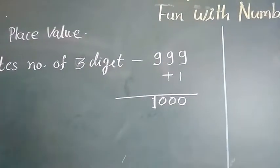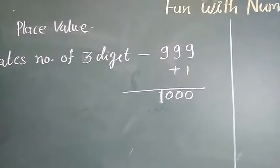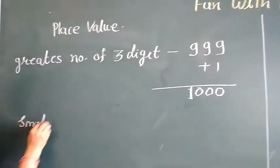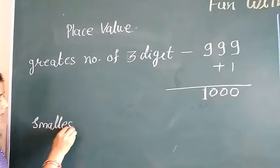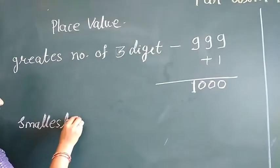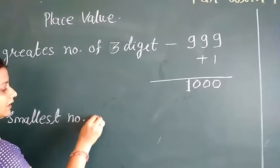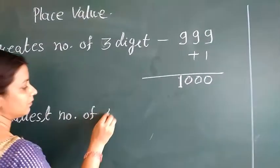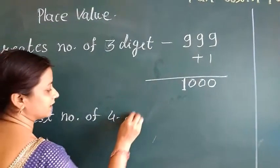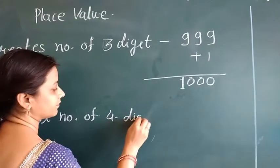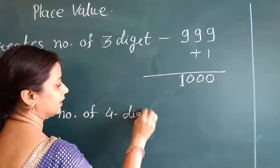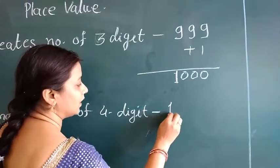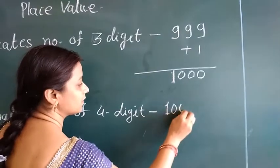So, the smallest number of 4 digits is 1,000.